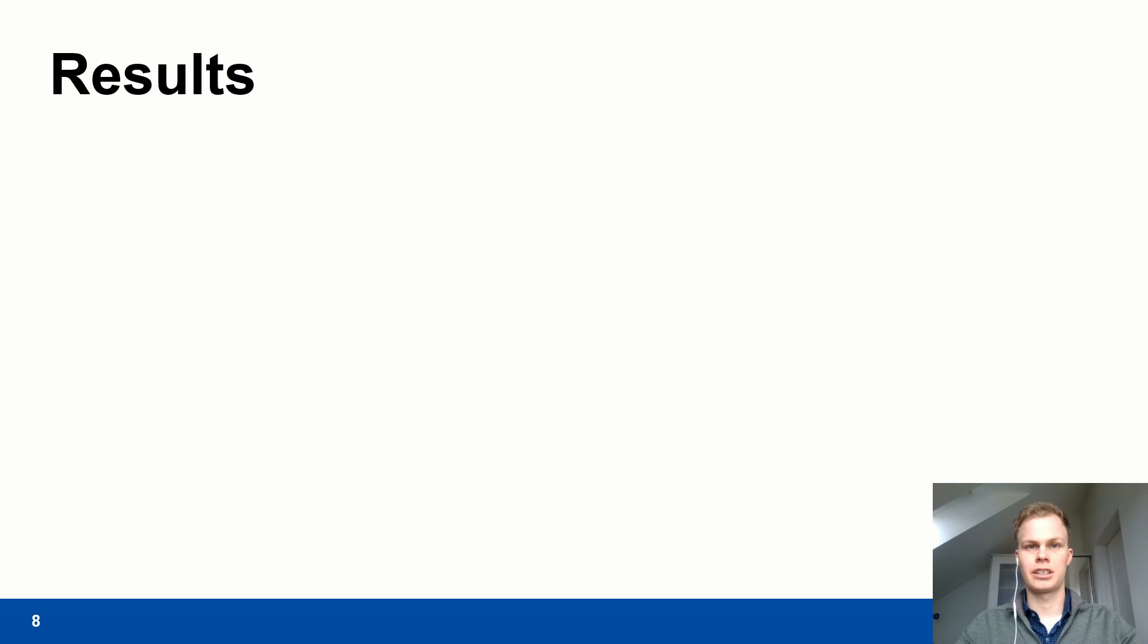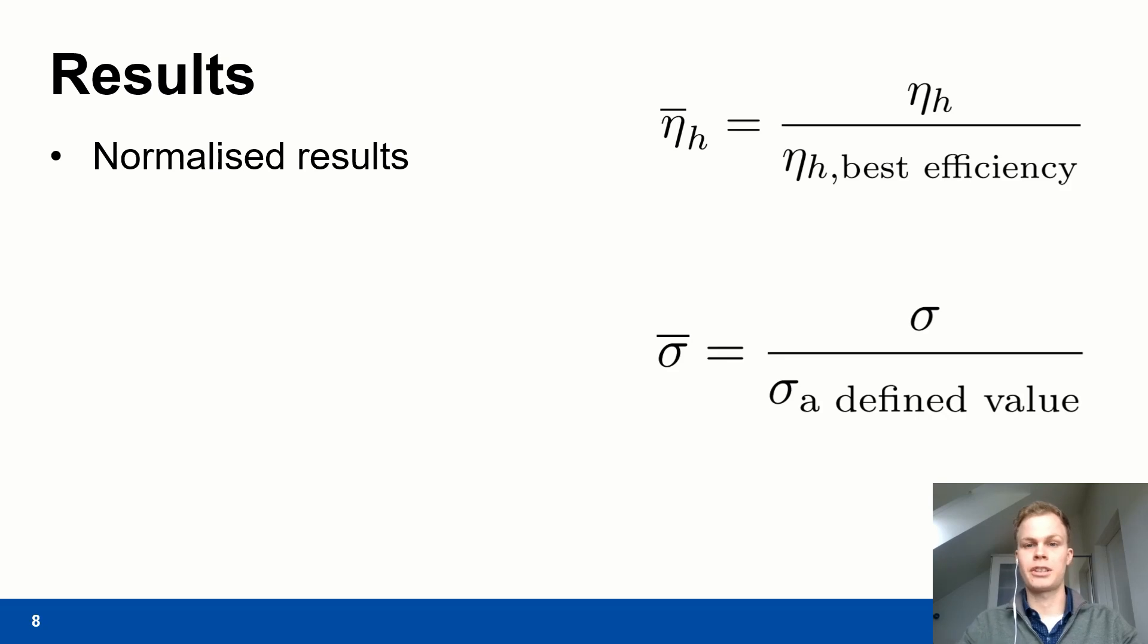Due to the confidentiality agreement between Rainpower and myself all results have been normalized. At the top right here you can see the normalized hydraulic efficiency which is hydraulic efficiency divided by the hydraulic efficiency for the best efficiency at the current run.